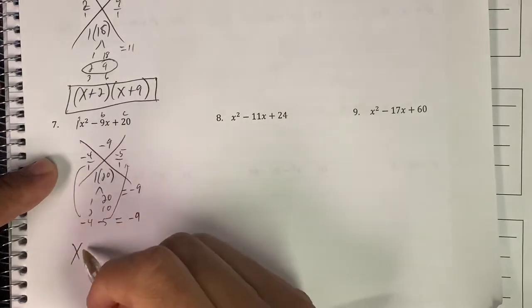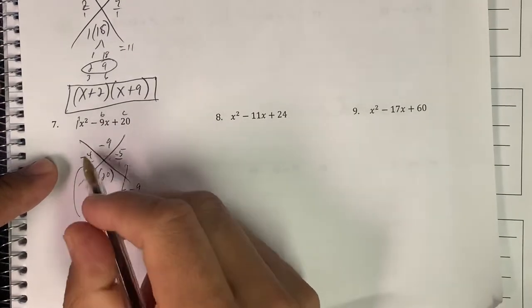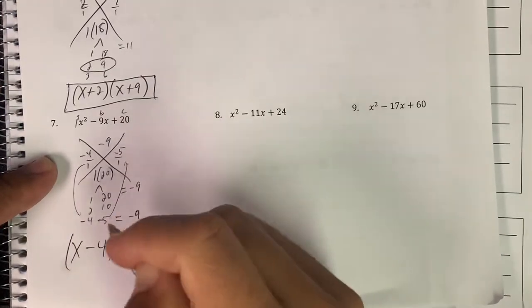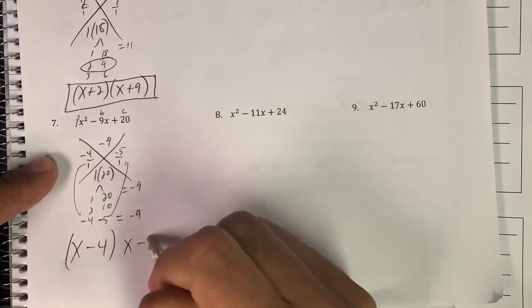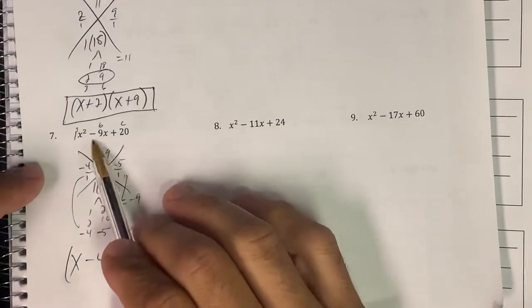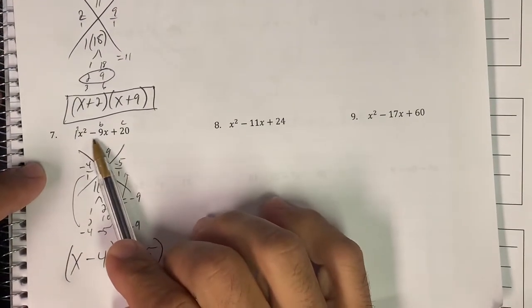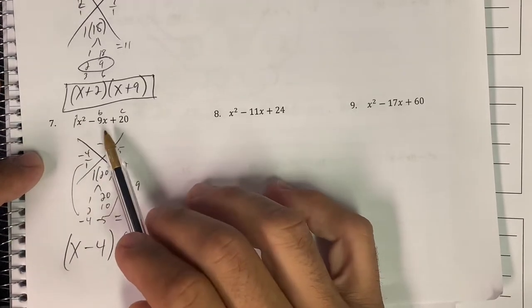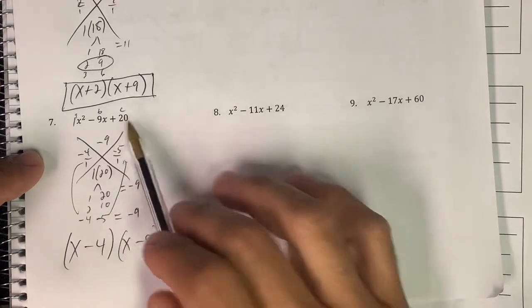So now I have, I used to write x plus, but this is going to be plus negative 4, so we just call that x minus 4 and we call that x minus 5. So if the middle number is negative, if b is negative but c and a are positive, then you need two negative numbers to give you that positive when it multiplies, negative when it adds.